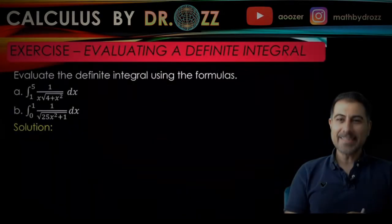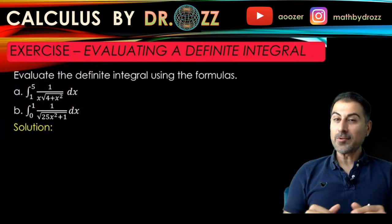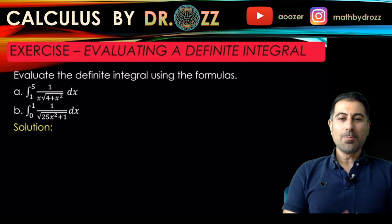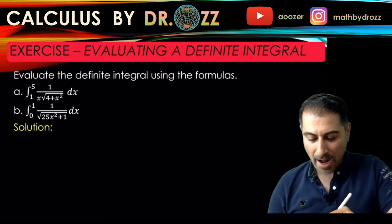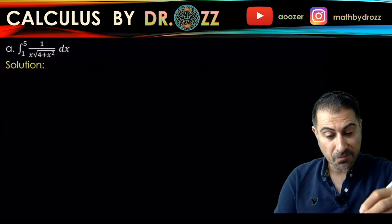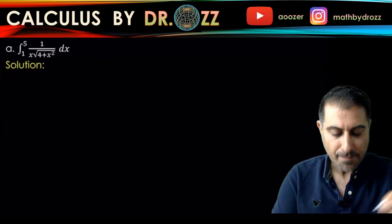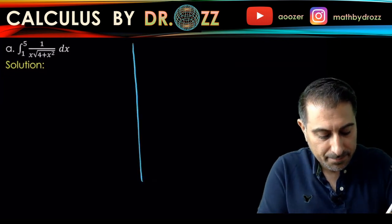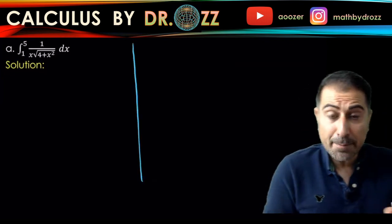All right, let's look at part A. This is the definite integral from one to five, one over x radical four plus x squared. As always, I'm going to handle this problem. This is a definite integration problem, but we first have to find the anti-derivative of the integrand. So I'm going to do that evaluation separately.